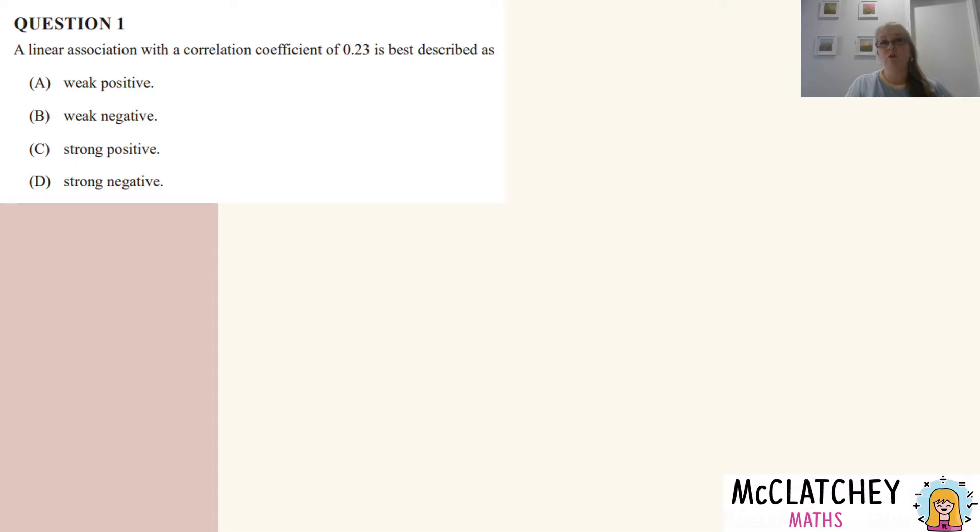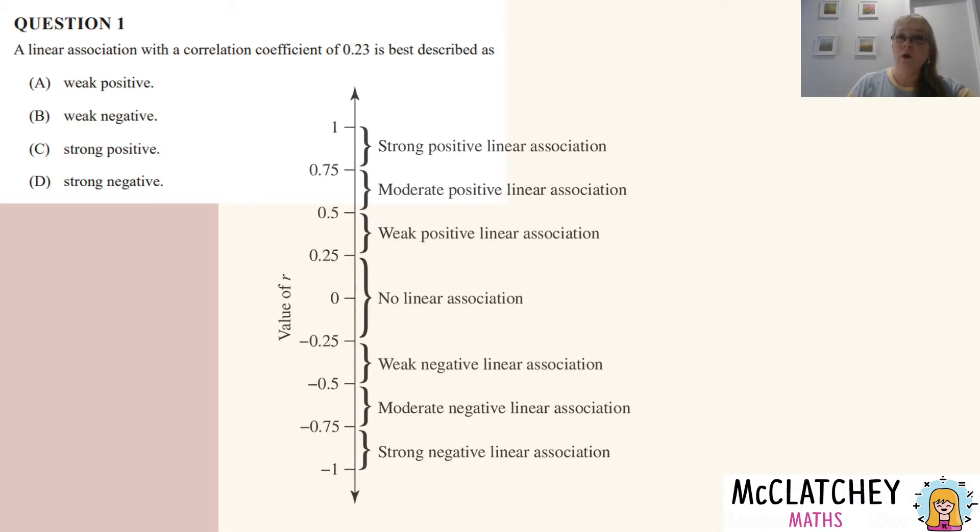So first of all, we just need to unpack the question a little bit, try not to rush too fast. Firstly, we know it's a linear association, so that means a line of least squared regression would be plotted through the scatterplot. And a correlation coefficient is also known as Pearson's correlation coefficient, or it's the value for r. Now, if you would recall, your textbook may have shown you some sort of a scale like this for r.